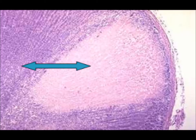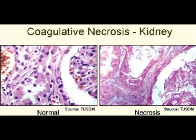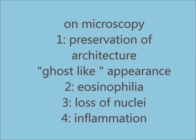Microscopically there is coagulative necrosis. You can appreciate a pink area of dead tissue surrounded by basophilic normal tissue. The ghostly outline is preserved because of denaturation of proteins — the outline of the cell is preserved. There is an inflammatory zone and viable tissue, since necrosis occurs in living tissue and the living tissue responds by inflammation.